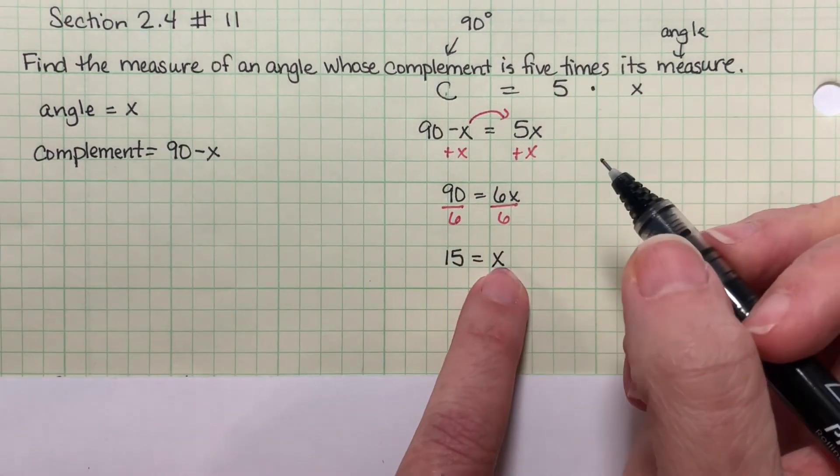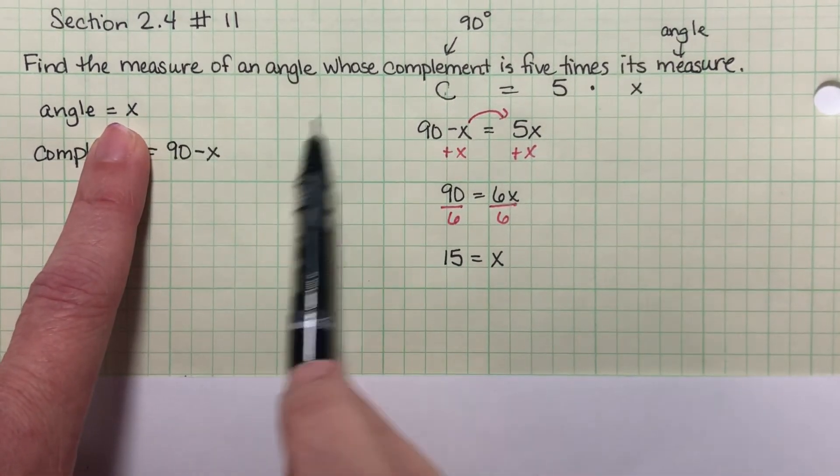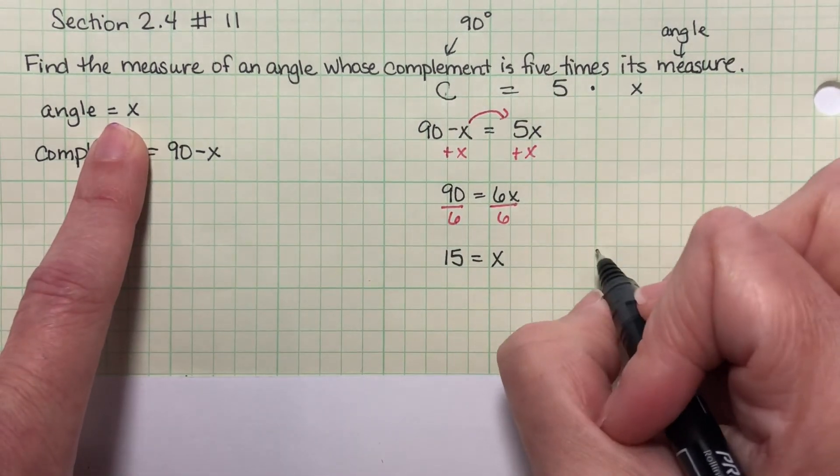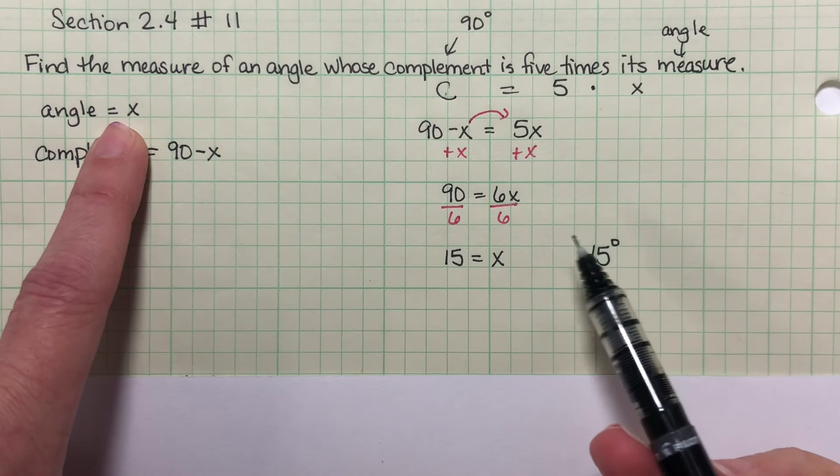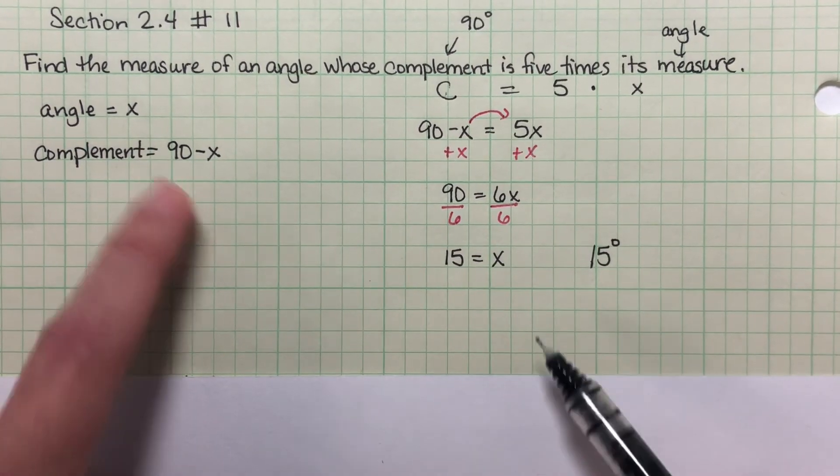I found X, which is the angle. All I'm asked to find is the angle. I'm not also asked to find the complement. So the answer here that they're looking for is 15 degrees. If they also asked you for the complement, you would just do 90 minus 15 to get your answer.